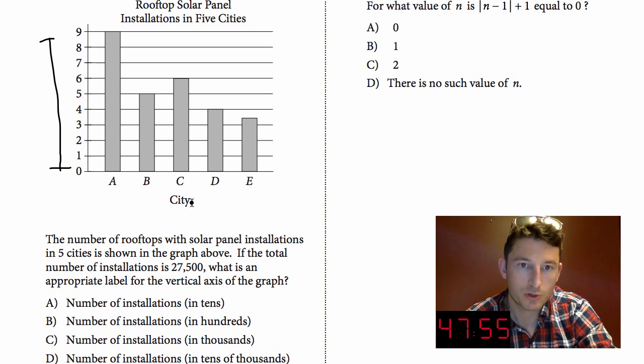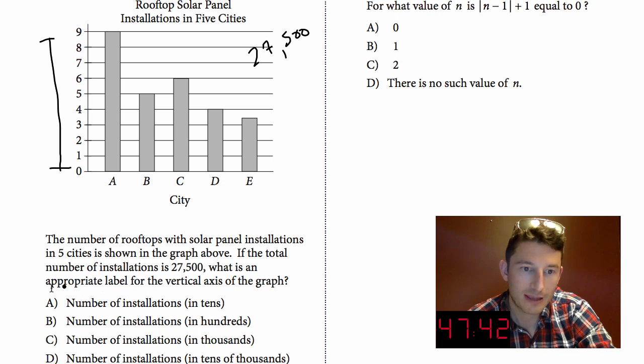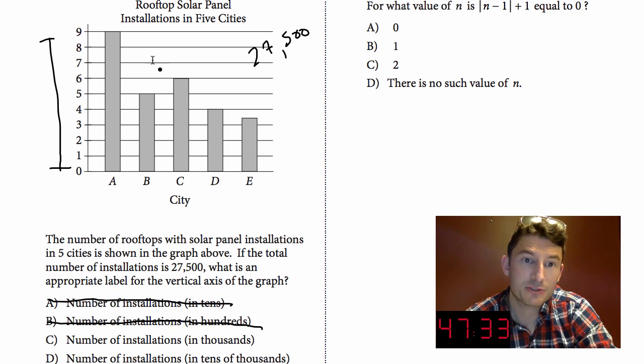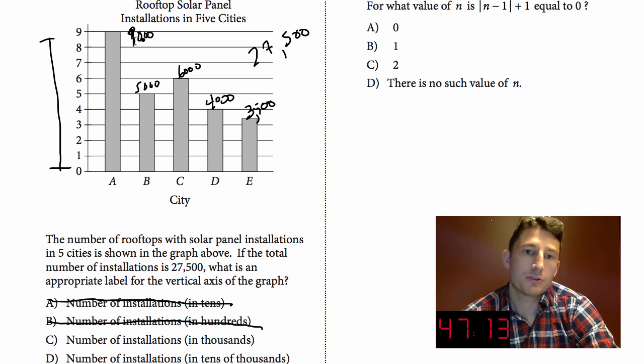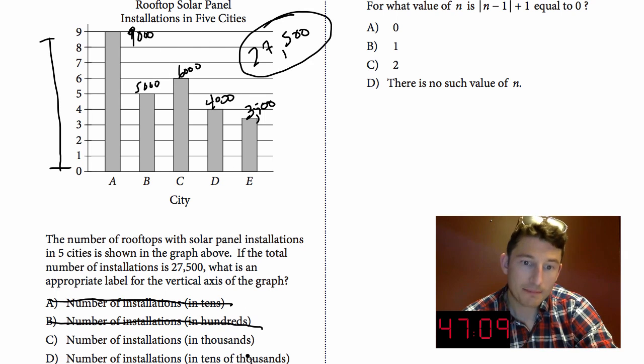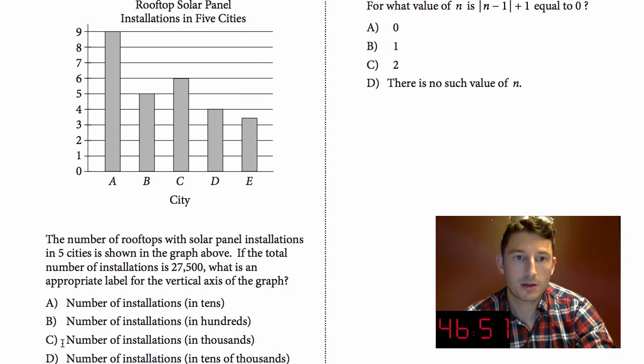We're looking for 27,500. We don't have units here. What do we want to know? Number of installations in tens, hundreds, thousands, or tens of thousands. Well it can't be in tens, that's too small, and it really can't be in hundreds because we're at 27,000. But if you want to test this out, let's say this was 9,000, the answer was thousands: 9,000, 5,000, 6,000—this answer is looking good. 4,000 and that one looks like 3,500. Those are going to add up to 27,500. You can't pick tens of thousands because tens of thousands, that's saying 9 but in tens of thousands that'd be 90,000. Your basic unit is 10,000, it's too big. That would be 90,000, 50,000, 60,000. Choice C.